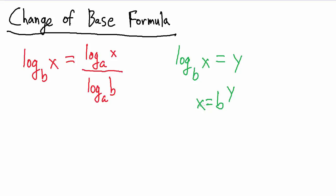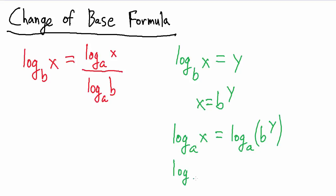Now what we want to do is take the base A log of both sides. So we take the base A log of the left side and the base A log of the right side. On the left side we still have base A log of X, and on the right side we have the base A log of B to the Y. Remember the power rule for logarithms — the power rule says we can take this Y out and write it as a factor. So this equals Y times the base A log of B.